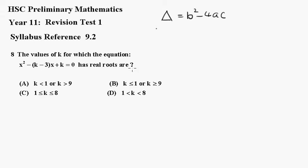Now, for these to have real roots, the discriminant must be greater than or equal to 0. So now we'll have to look at what b, a, and c are. In this case, b is equal to minus k minus 3.